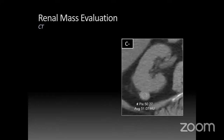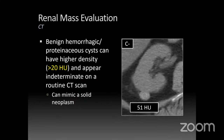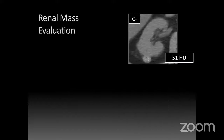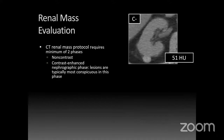If a lesion measures 51 on non-contrast, we can't call it a simple cyst — it's above 20. Benign hemorrhagic and proteinaceous cysts can have higher density, over 20, and appear indeterminate on routine CT. That's where a renal mass evaluation is needed. A CT renal mass protocol requires a minimum of two phases: a non-contrast phase and a contrast-enhanced nephrographic phase, occurring about 95 seconds after IV contrast. Lesions are typically most conspicuous in this phase because the kidney is fully enhancing both cortex and medullary pyramids.